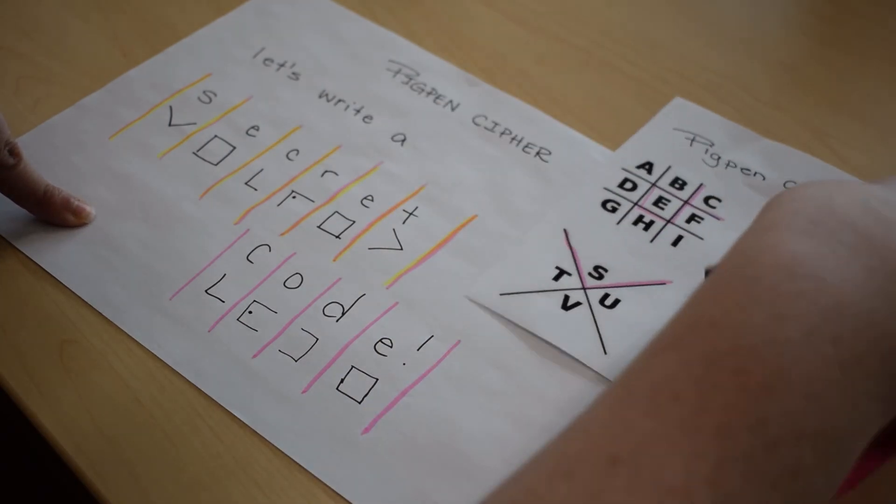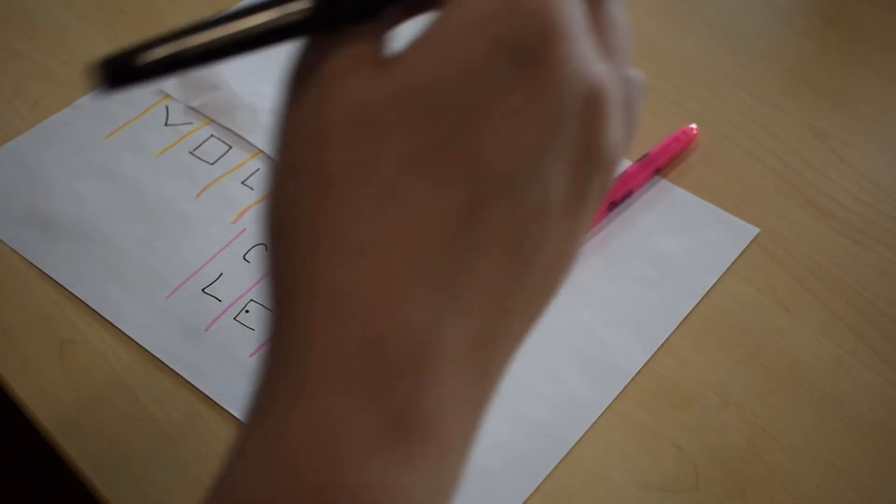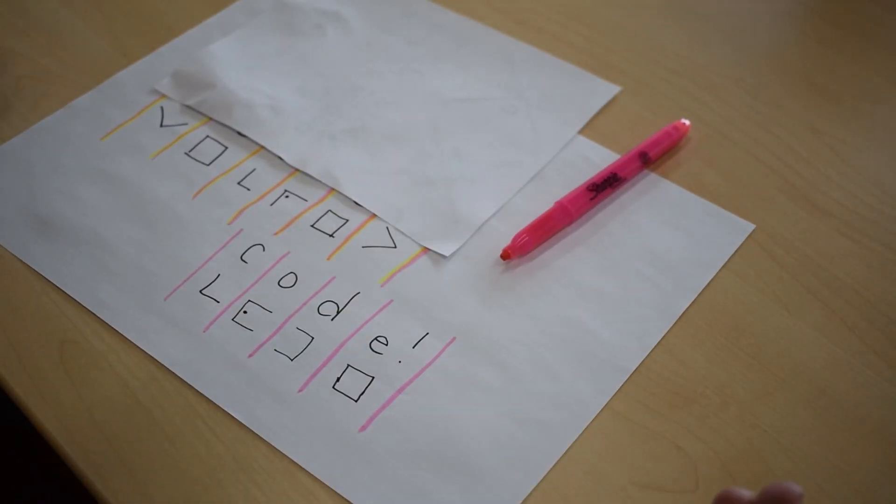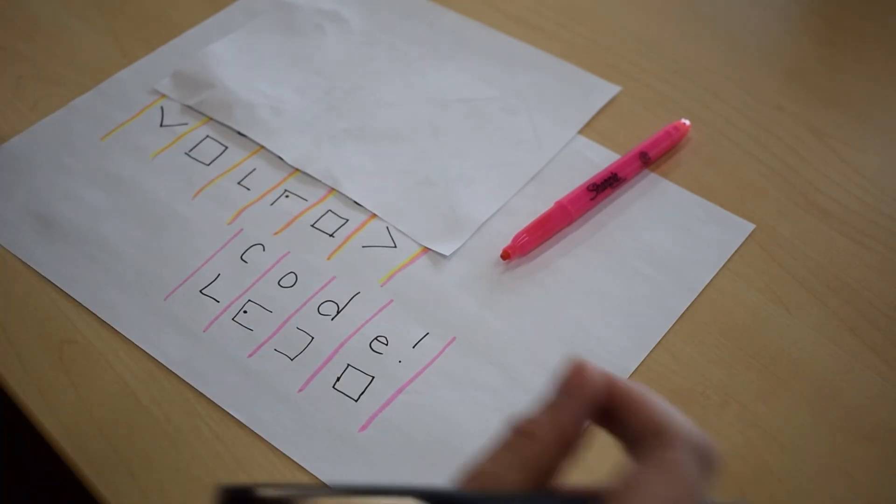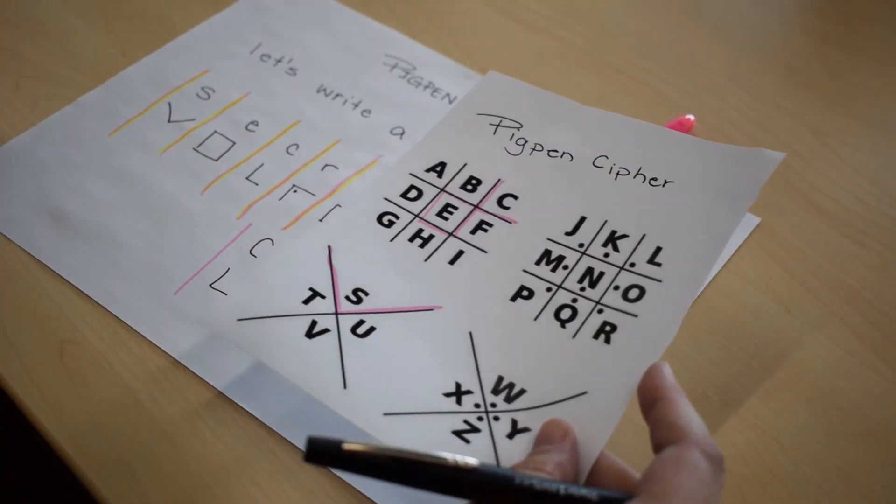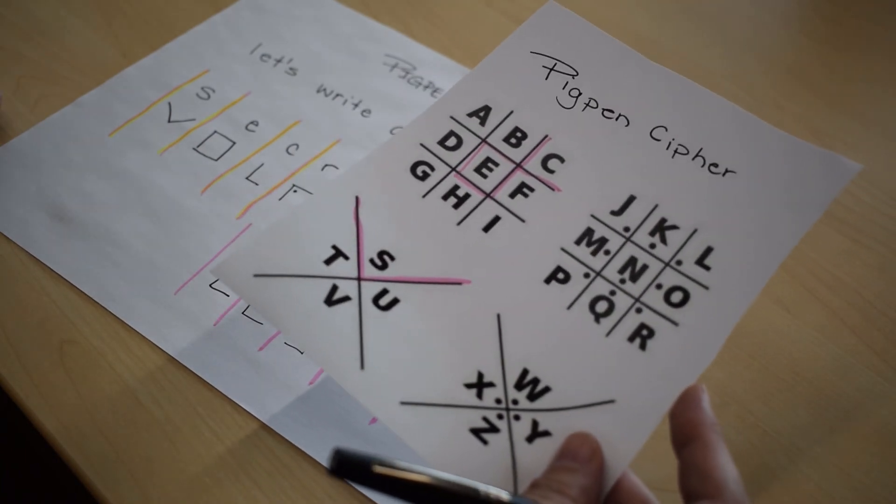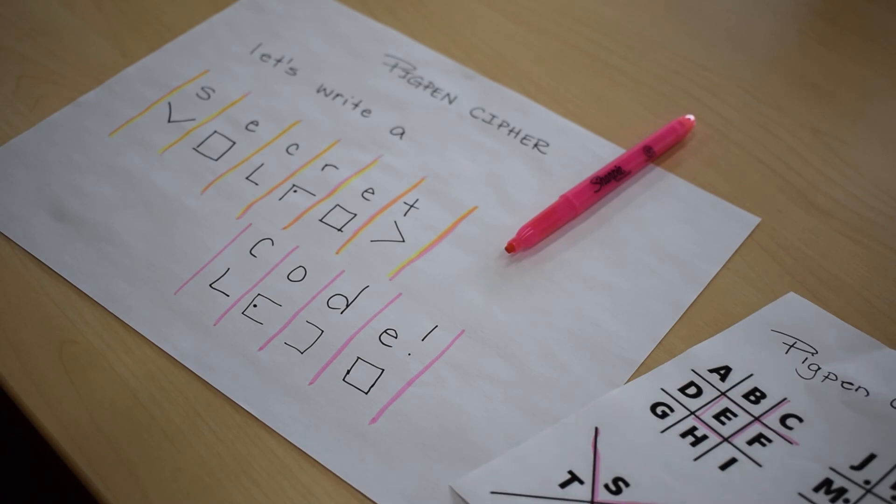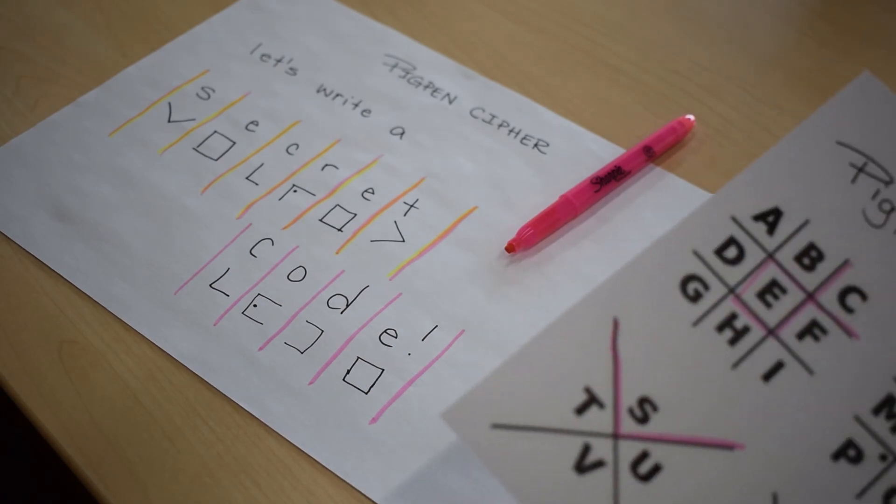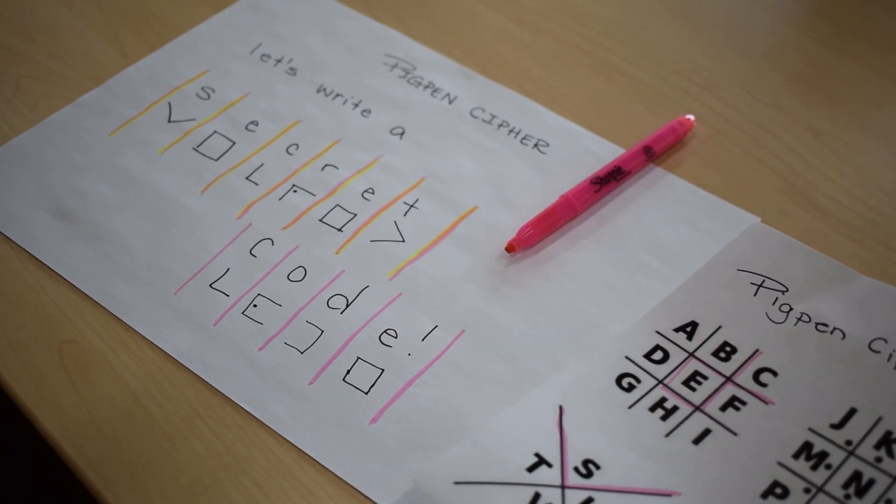So if I didn't have my other lettering here, my code would look like that. And it wouldn't mean anything to anyone unless you had the key. So if you're writing someone a secret message, try to send this to them first and then send your message. And then no one else, unless they have the key, can read your message.